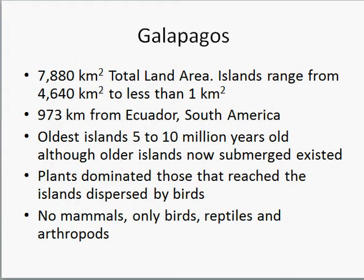The Galapagos is about a thousand kilometers from South America, the nearest continent, and the oldest islands above water are about 5 to 10 million years old. The oldest islands are now completely submerged. It's likely that there were even older islands which species could have colonized, and then subsequently colonized the newer islands which exist today. So the plants and animals in the Galapagos could conceivably have dispersed there more than 5 to 10 million years ago.